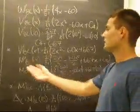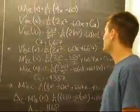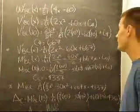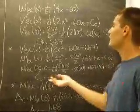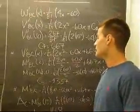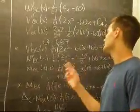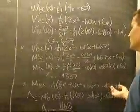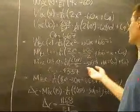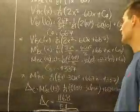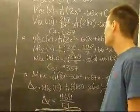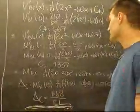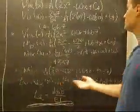We then integrate that to get the moment equation from B to C, giving us this equation with an unknown C5. In order to solve for C5 we know that at x equals 10 the moment is 0, so we put that into the equation which gives us C5 equals negative 4,337, giving our final moment equation from B to C.